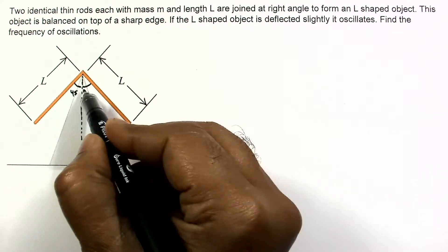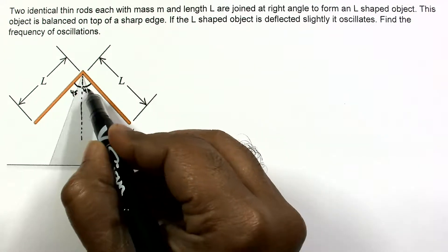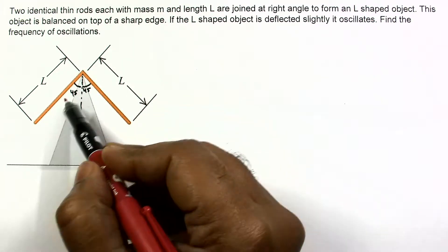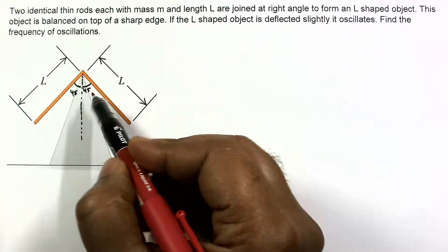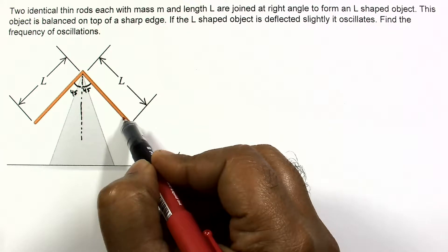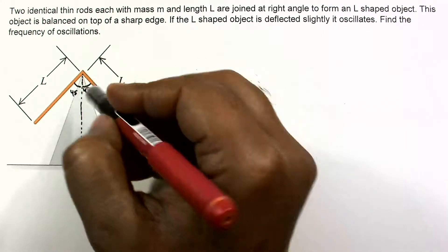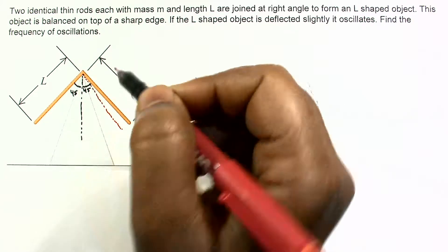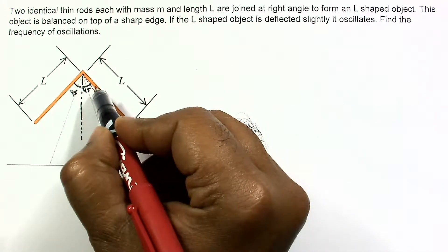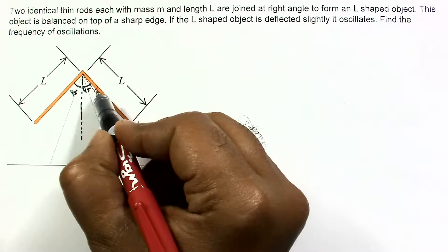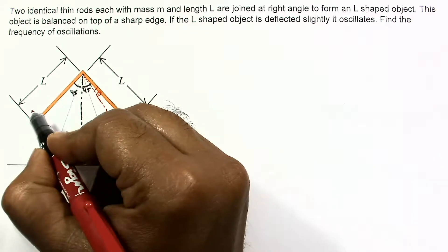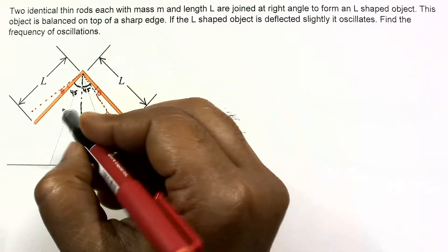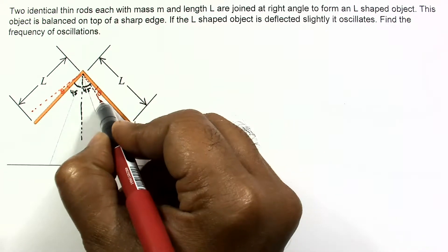This angle is 45 and this angle is also 45. Now let us deflect this rod slightly. If I deflect it in the clockwise sense by a small angle, in the new location after deflection it is deflected by some angle theta. Here also it is deflected by the same amount, angle theta. After deflection, its weight mg is acting downward.